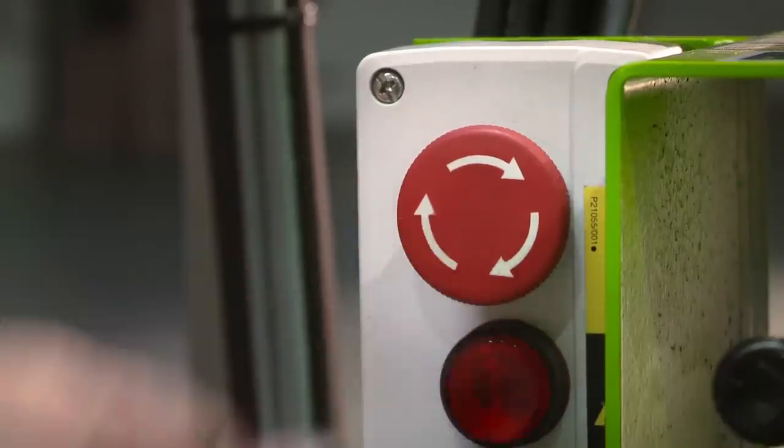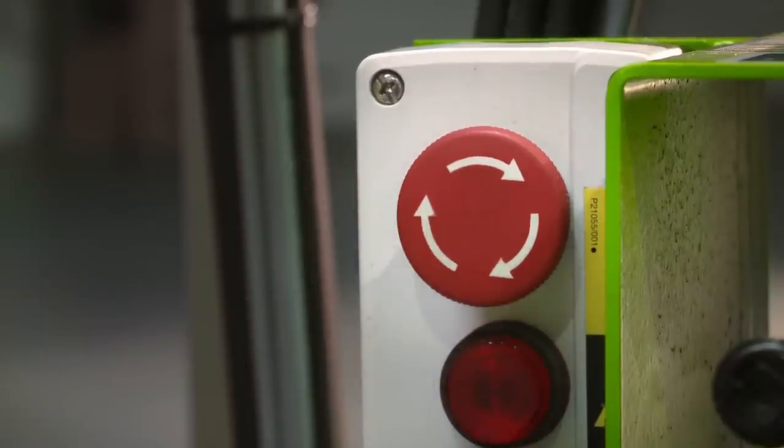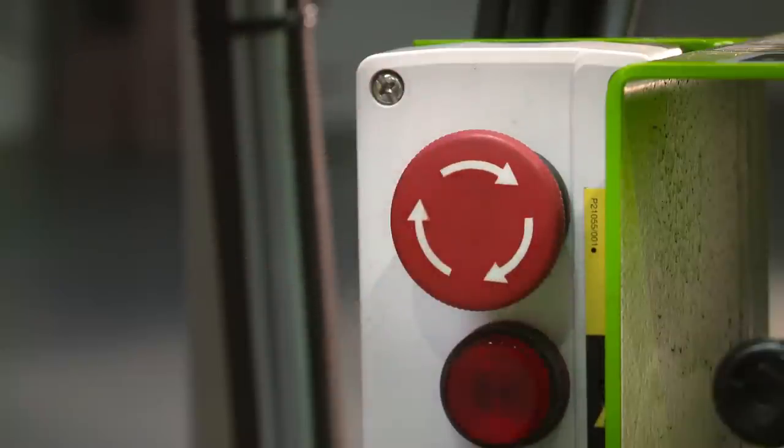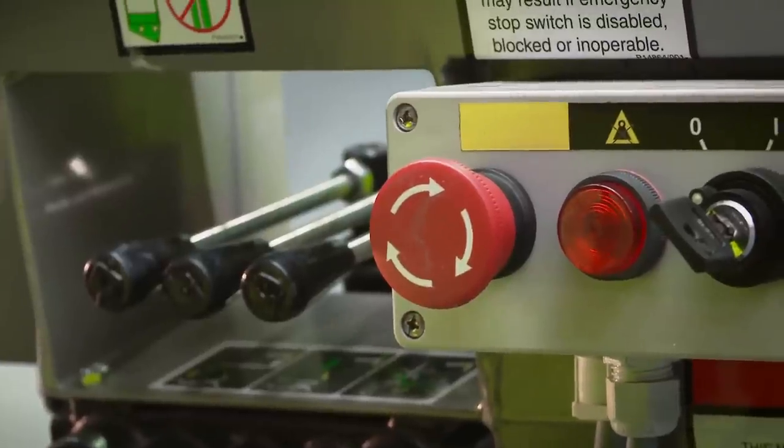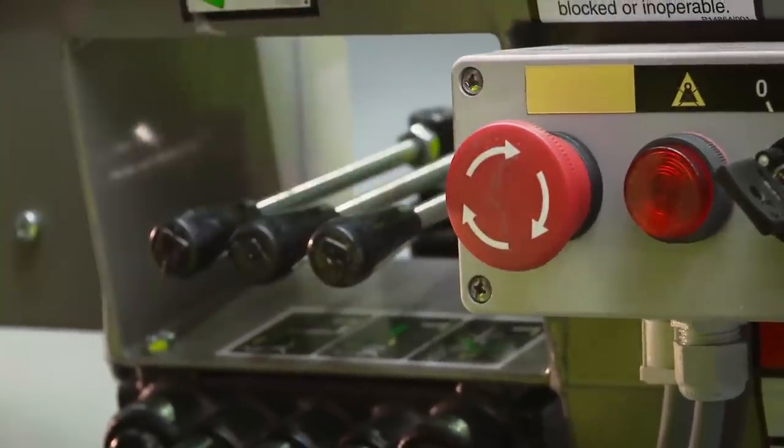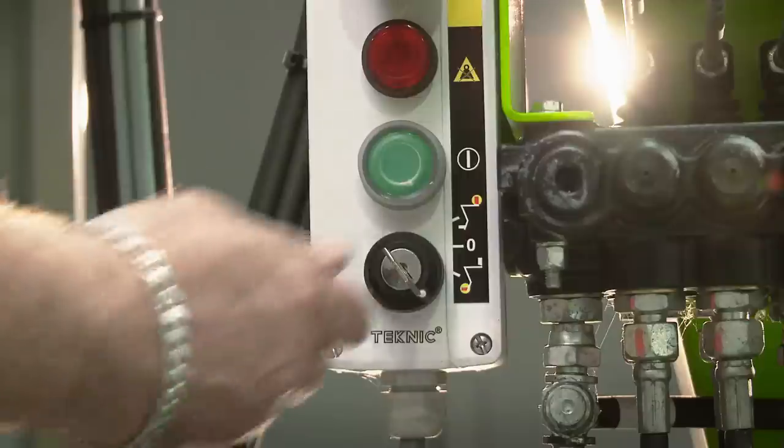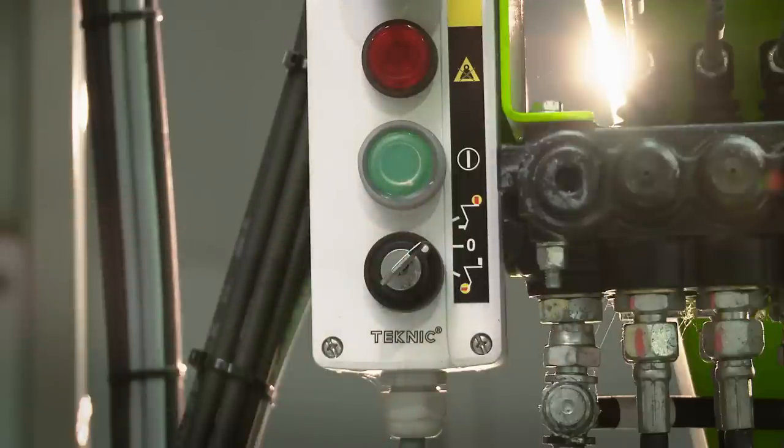There is a red e-stop button next to every green power button on the machine. This allows the machine to be quickly stopped from either the base or the cage in the event of an emergency. A key switch at the base controls enables the operator to isolate the controls to the cage and prevent unauthorised operation from the base.